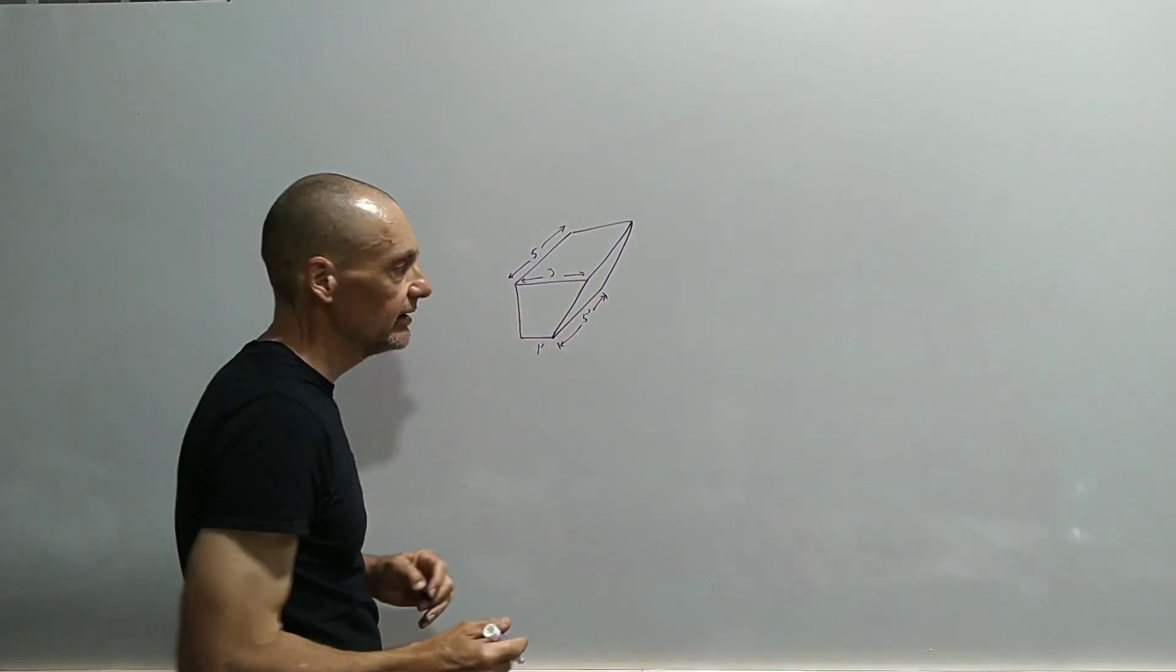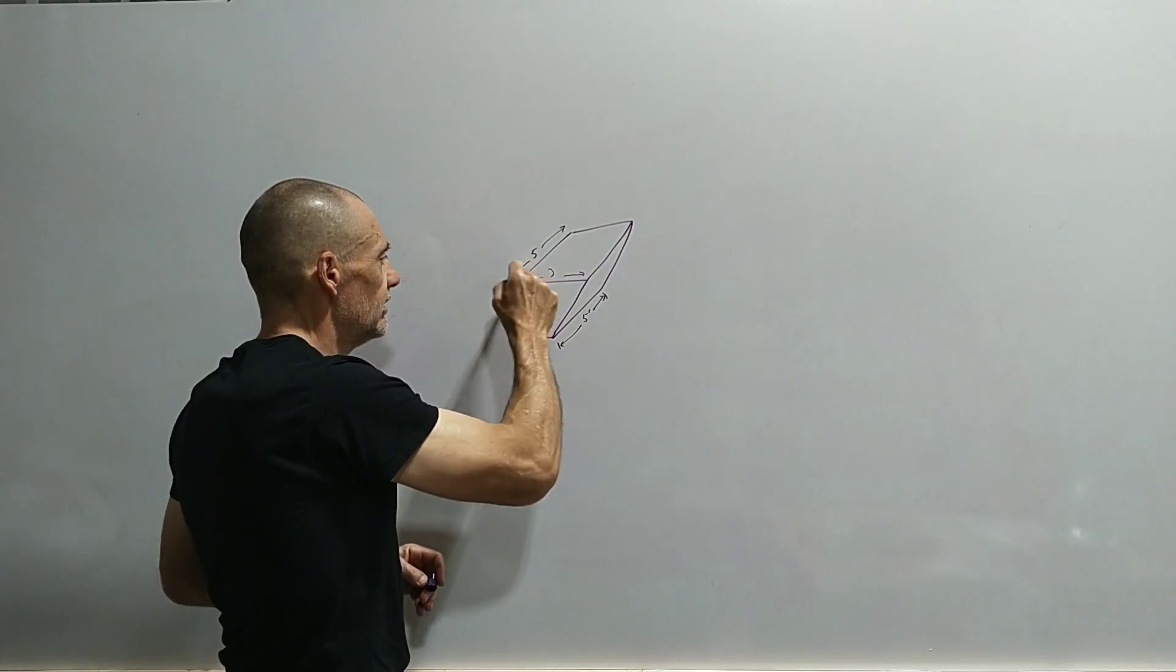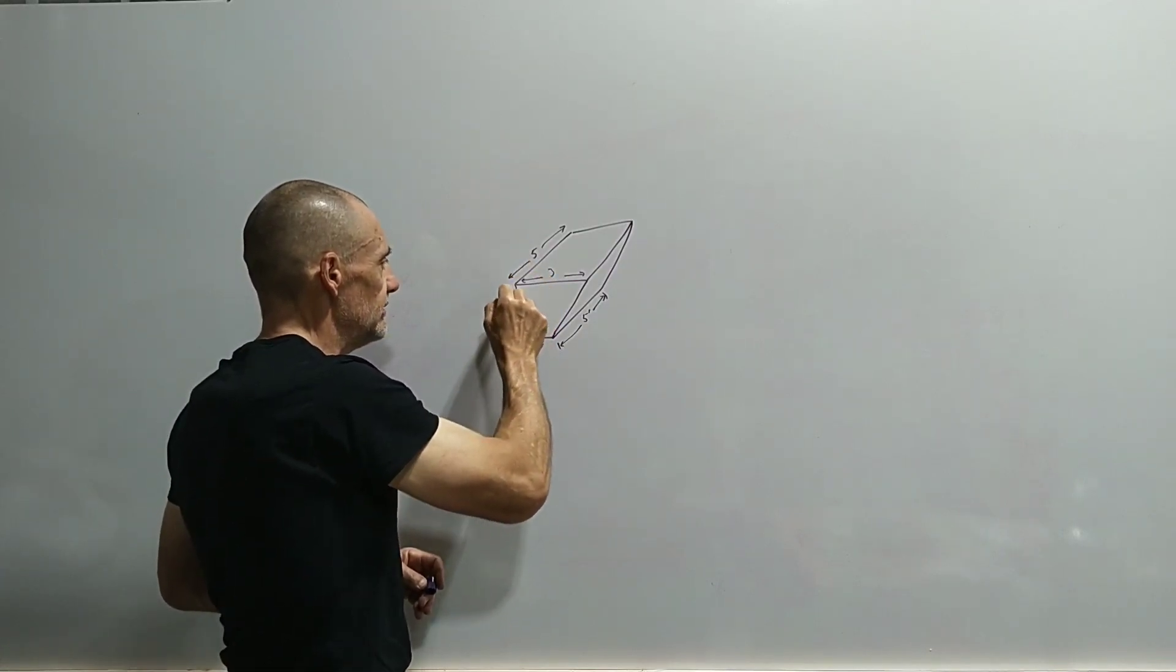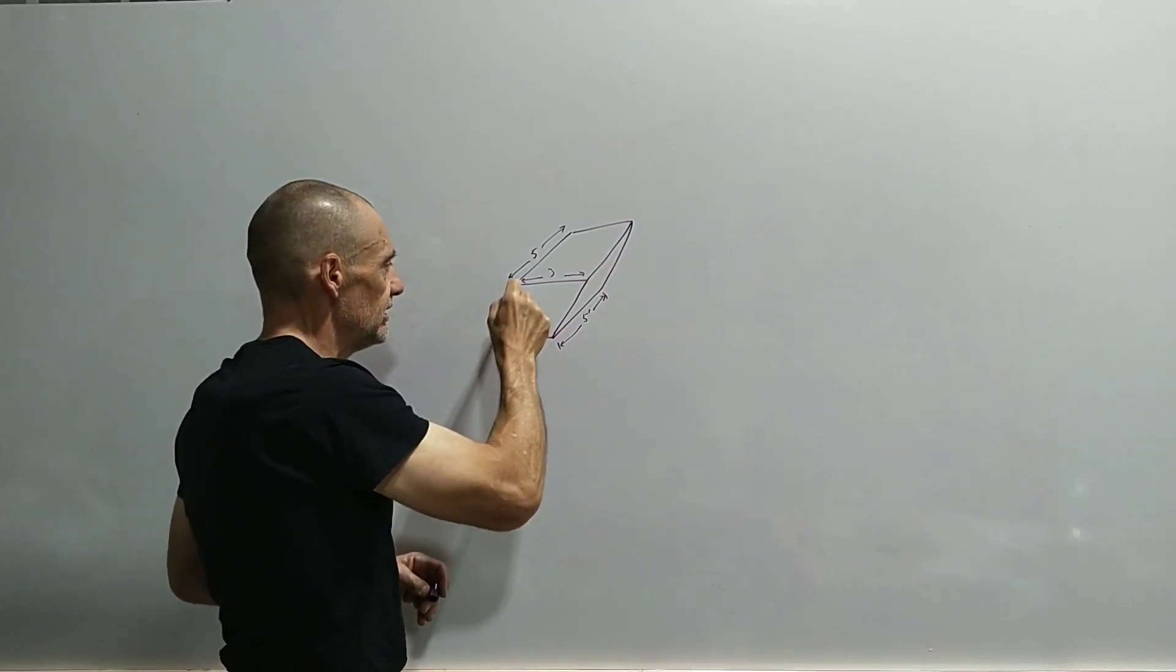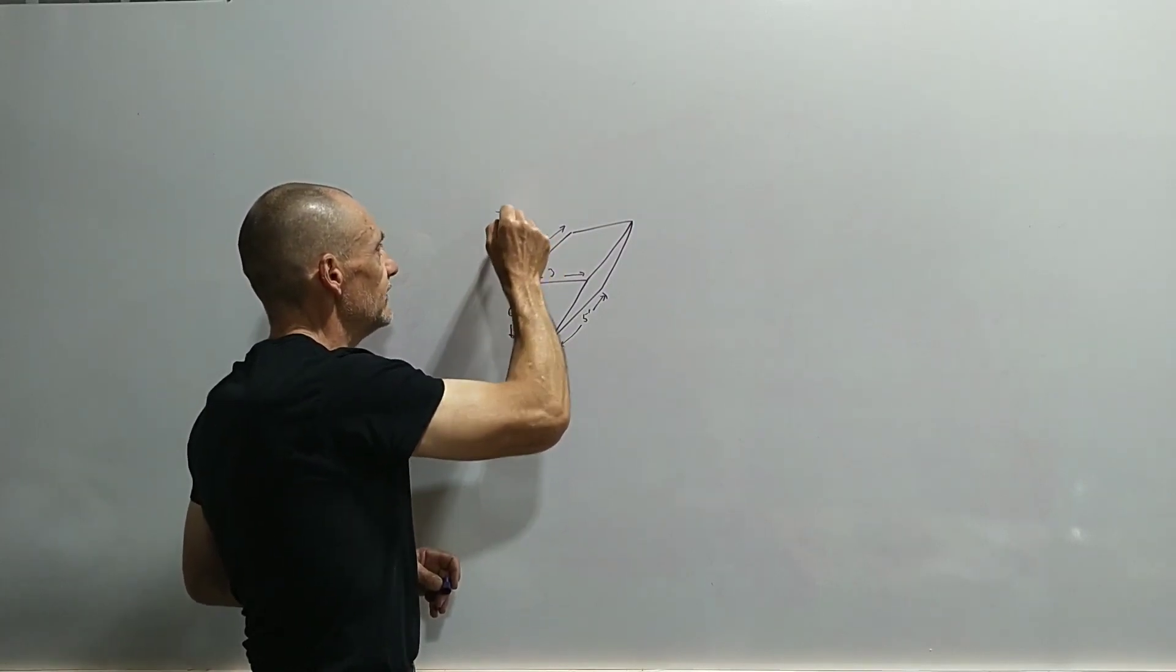And go ahead and pump this thing out. Let's make it six feet deep. So the tank is six feet deep, and let's go ahead and pump it out nine feet above the top surface of the tank.